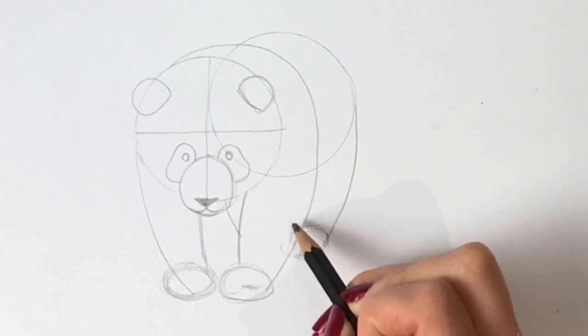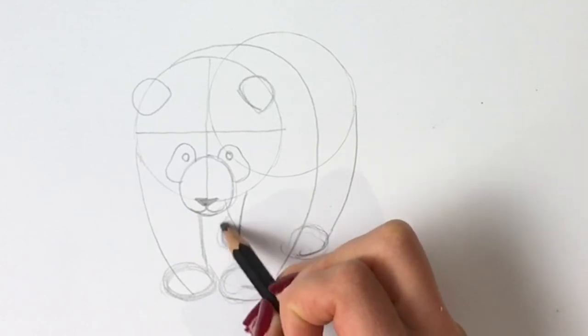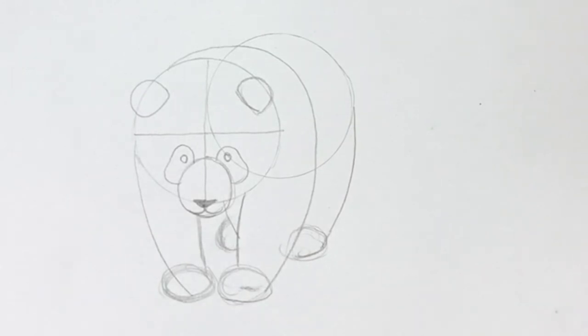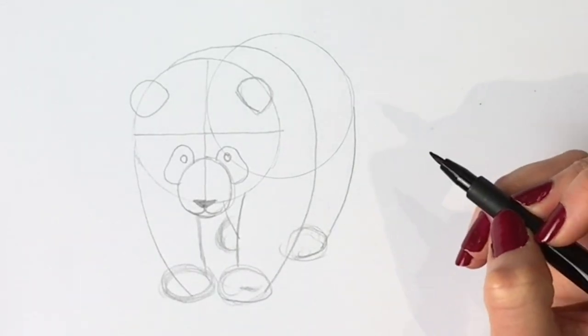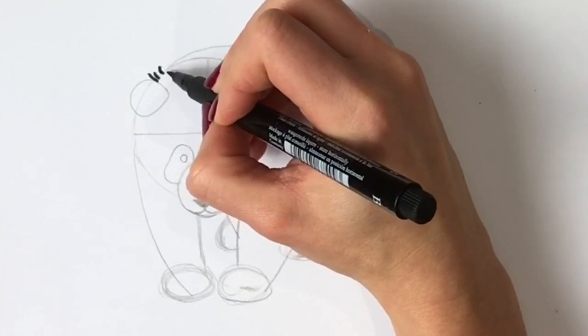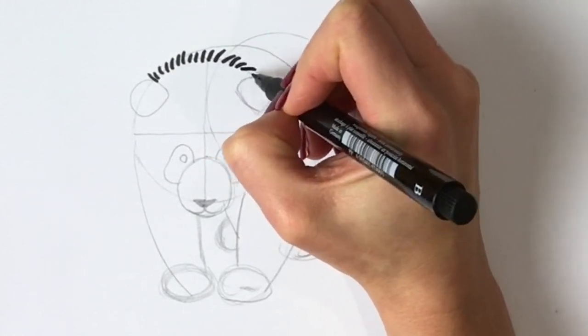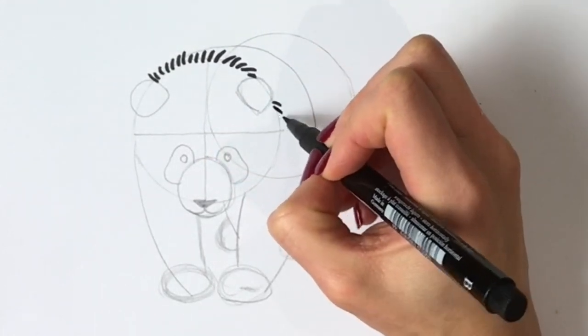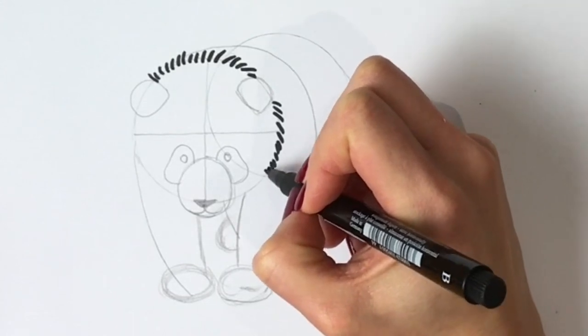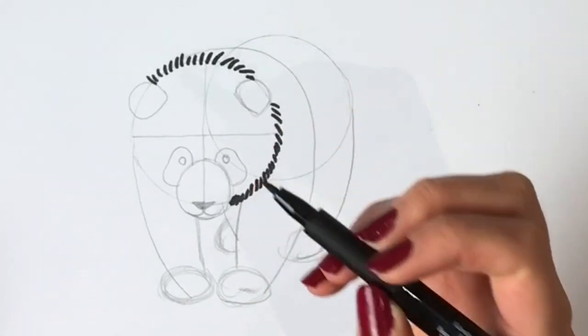Now we're going to use pen on top of that. You can use any kind of black pen you like. I've got this kind of brush nib pen so I'm going to use that. And we're going to use lots of little strokes just to show because this is a panda cub so it's really quite fluffy. So lots of little strokes like that. And lots coming around like that. I'm going to speed up the process now.